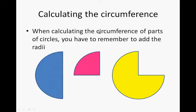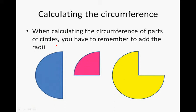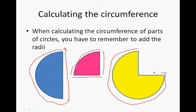When calculating the circumference of parts of circles, the circumference is this part, but it's also that part. So it's the circumference part plus radius plus radius. The circumference part is that curved part and then we're adding radius and radius. With the three-quarter circle, it's the circumference part and then we're adding radius and radius.